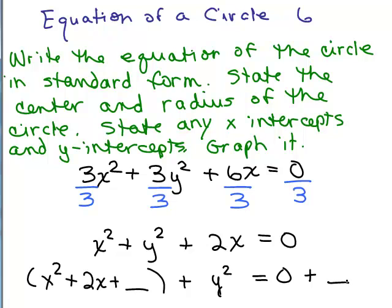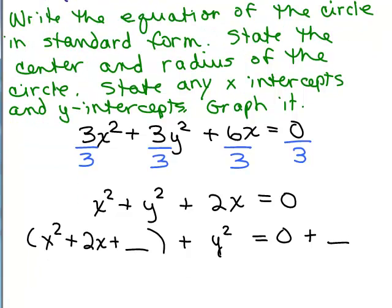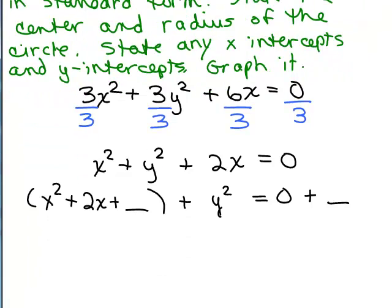You could write that as y minus 0 squared but it's easier to just leave that as y squared. What this means is the y coordinate of the center will be 0. In other words k is 0. And then we have this 0 on the other side. Now I'm going to put a plus a blank because whatever I add over here on the left I'm going to have to add it also on the right. So let's go ahead and complete the square.